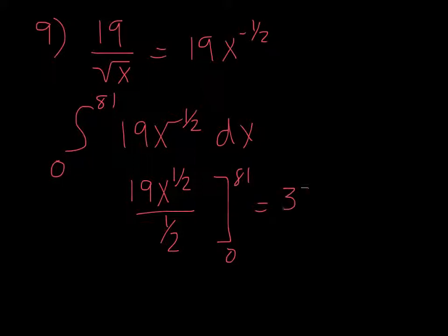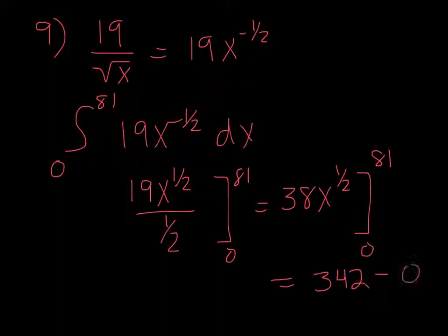Well, that's the same as 38x^(1/2) evaluated from 0 to 81. So if we plug 81 in, we're going to get 38 times 81^(1/2), which is 342. Plug 0 in, we get 0, so it's just 342.